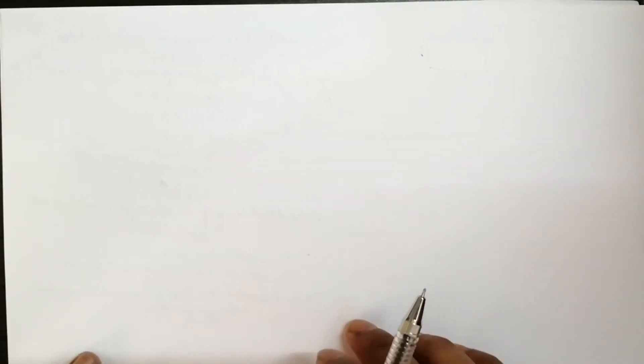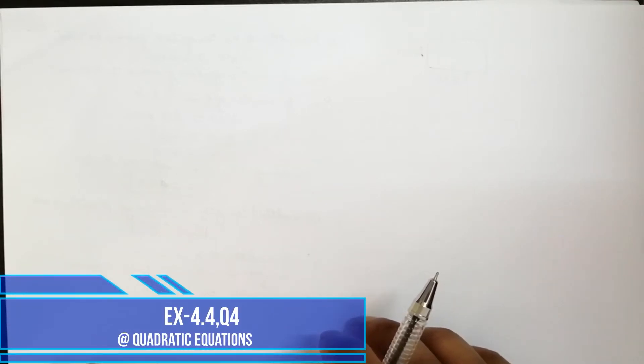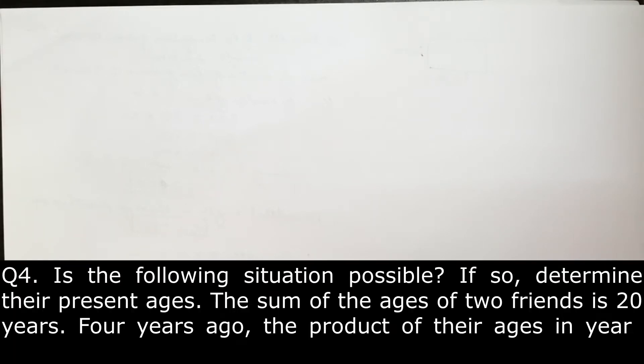Okay, now moving forward to the next question, Exercise 4.4, question number 4: Is the following situation possible? If so, determine their present ages. The sum of the ages of two friends is 20 years. 4 years ago, the product of their ages in years was 48.